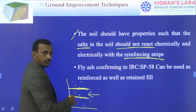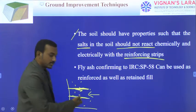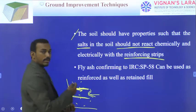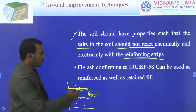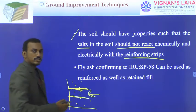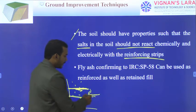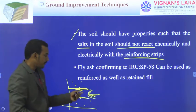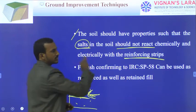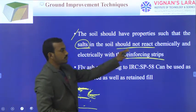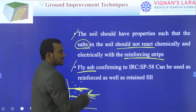We discussed that the lateral force is counteracted by friction between the soil and the reinforcing element. If soils react chemically or electrically with the reinforcing strips, friction between soil and reinforcing element is reduced. We can also use fly ash as a backfill material, but the fly ash must conform to IRC SP 58.